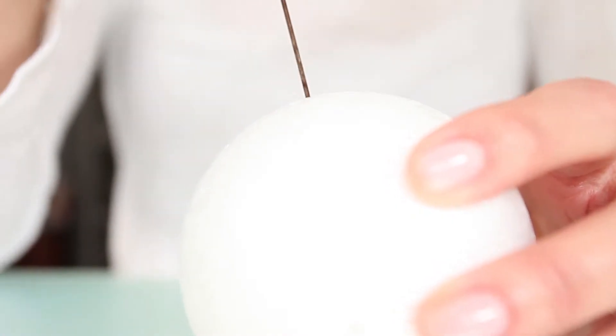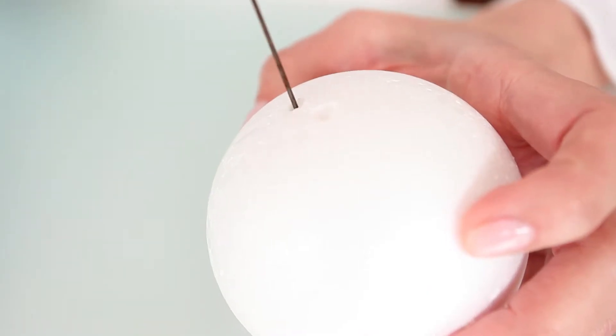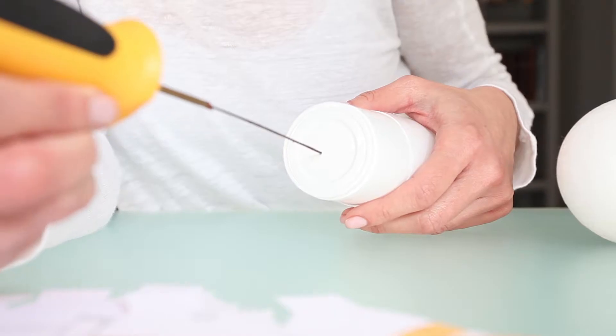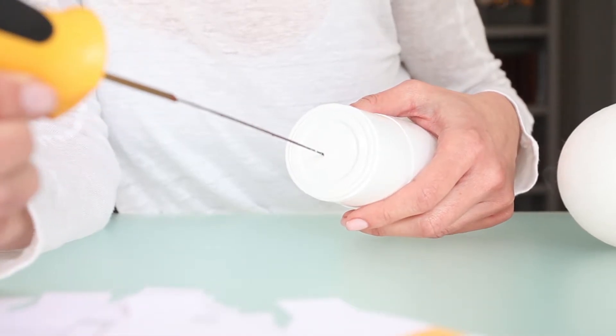Make two holes in the polystyrene bowl with the polystyrene wire cutter, and also two other holes on the plastic cup base.